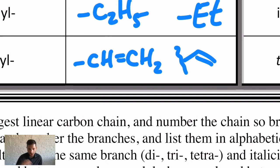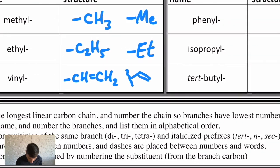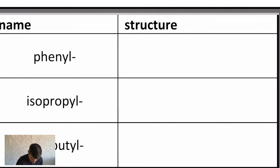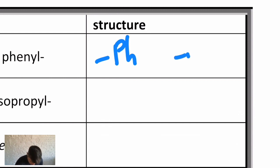That's just a common enough branch, vinyl, often abbreviated as Vi. Phenyl, often abbreviated as Ph, is a benzene ring attached to a larger carbon chain. So it's one hydrogen shy of a benzene.